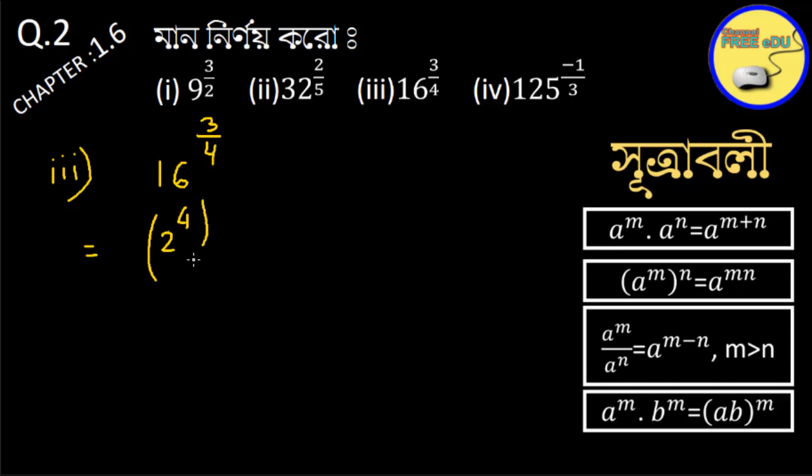For problem (iii), we have 16 to the power 3 by 4. 16 equals 2 to the power 4, so this becomes 2 to the power 4 all to the power 3 by 4, which equals 2 to the power 3.